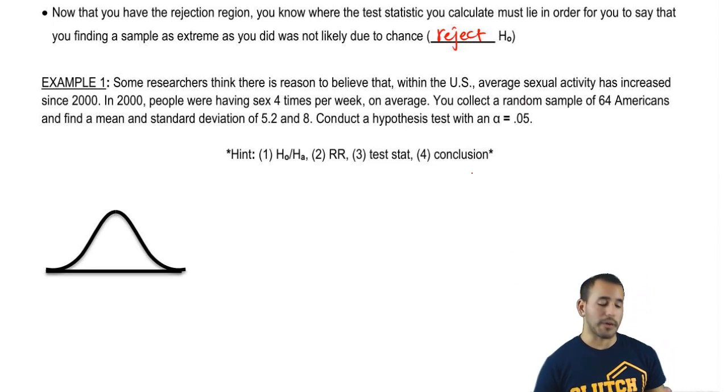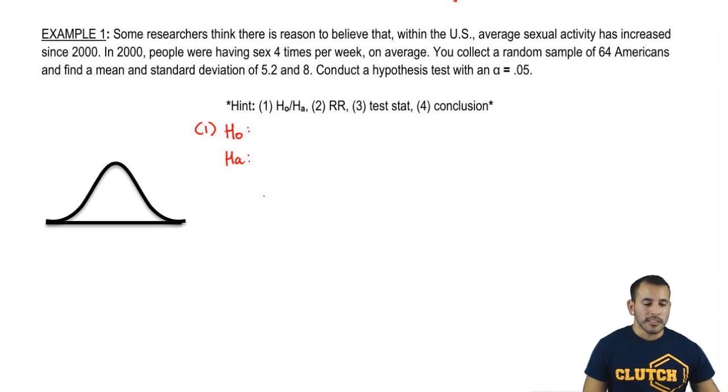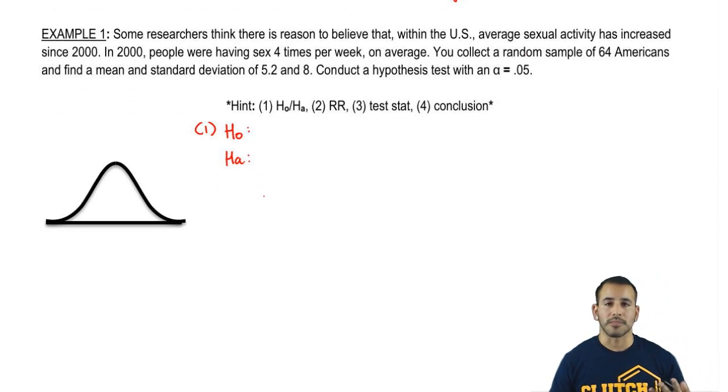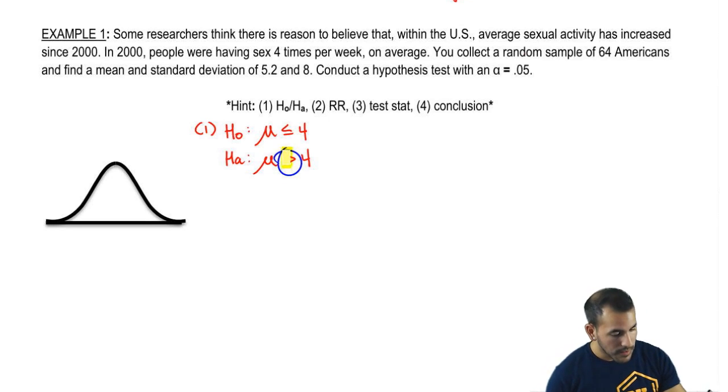So first off is our null and alternative hypotheses. We have reason to believe that activity has increased since 2000. So we're going to go ahead and say that that's our claim. It's increased compared to four times a week back in 2000. So Ha: μ > 4. And then our null is the opposite: H0: μ ≤ 4. And they said that our alpha is 0.05. Which one tells us which tail we're looking at? The alternate. We look at that sign from the alternate for it to tell us what side of the normal distribution we're going to be focusing. In this case it's telling us let's look at the right.